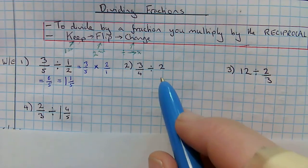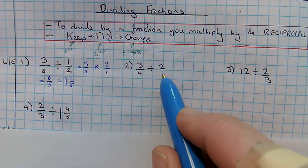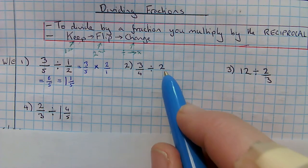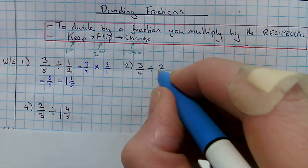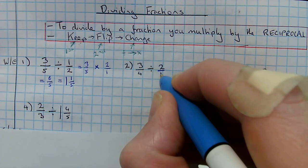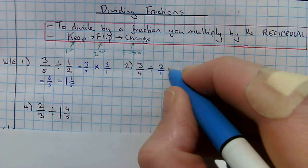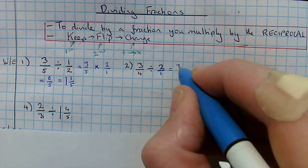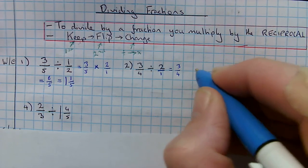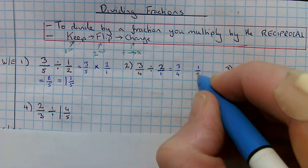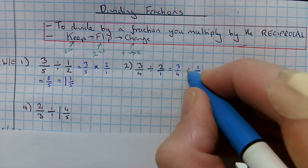The second one is a bit more complicated. I'm dividing by 2. We'll remember exactly as before. If we've got a whole number, we can just write it as a fraction over 1. So again, I keep my first fraction, I flip my second, and I change my divide to a times.